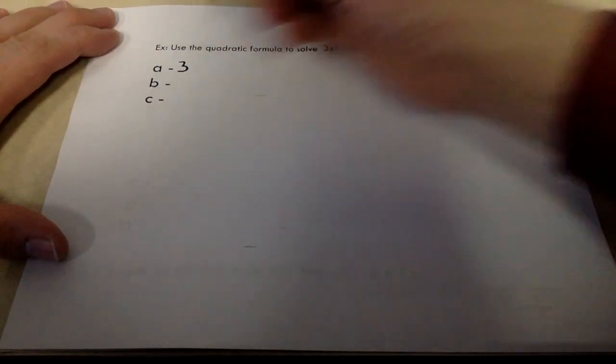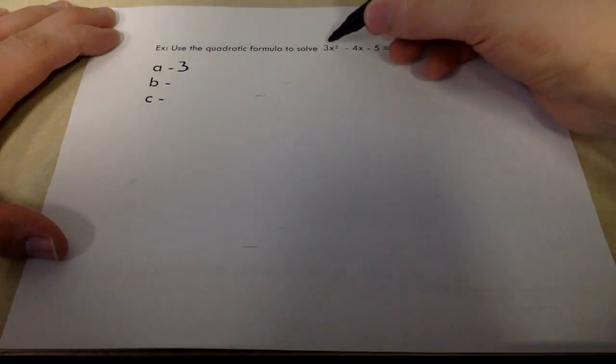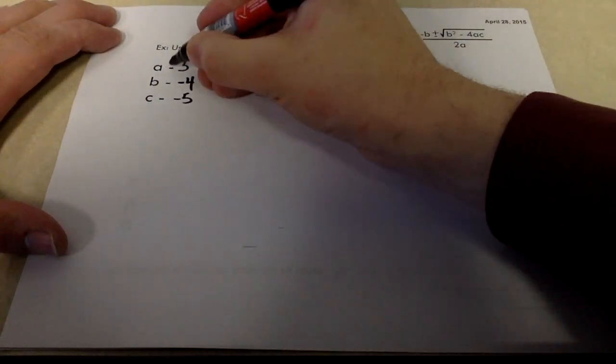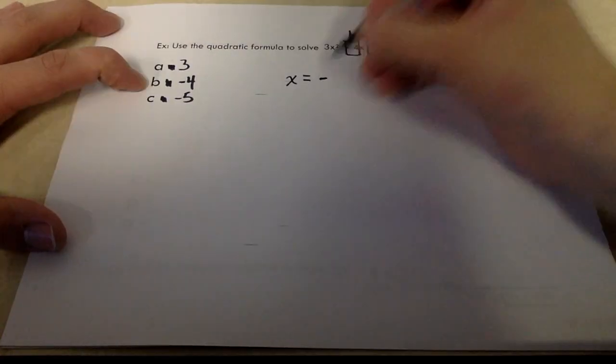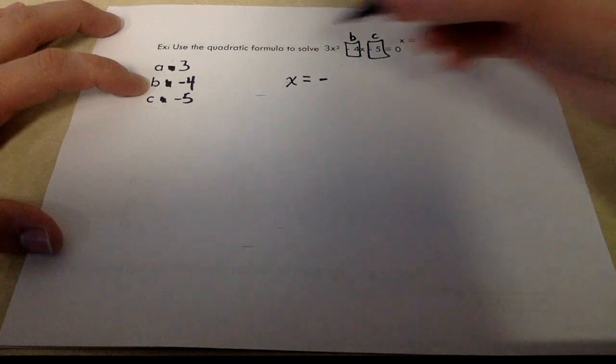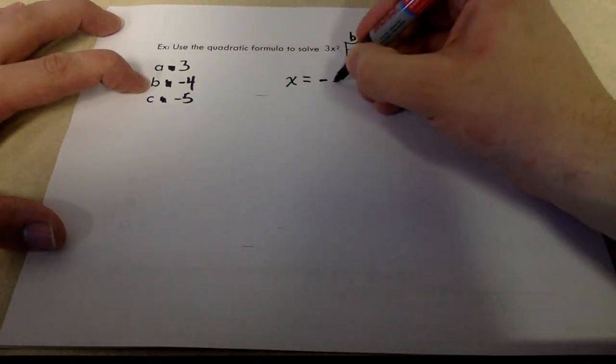This one's a little bit trickier because our a value and our c value are not 1. These aren't negative signs, by the way. These are just kind of dashes. Maybe I shouldn't have those there. Our formula says negative b is going to go in the first spot. Now, our b is negative 4. So be careful here.